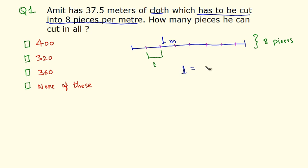Let's find out the length of each piece. The cloth is 1 meter and it is cut into 8 pieces, so this length equals 1 by 8, which equals 0.125. Now if the length is 0.125 meters, how many pieces can he cut when his cloth is 37.5 meters?